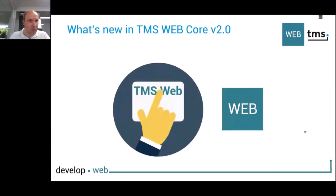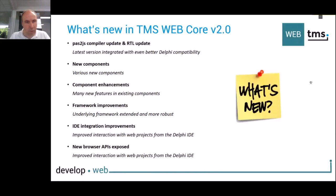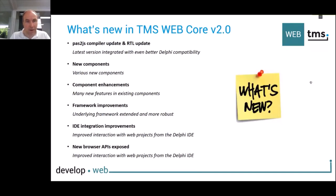We are going to spend about an hour together talking about what's coming up in WebCore 2.0. Here is an overview of the different areas where we did improvements: first, we integrated the latest Pass2JS compiler and the RTL updates. There is a lot of focus on new components and controls, and existing components got numerous enhancements. There are framework improvements, IDE integration improvements, and we also exposed some new browser APIs to make your application integrate even better with the browser.